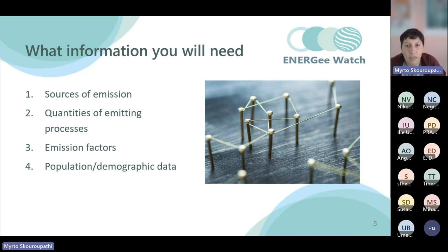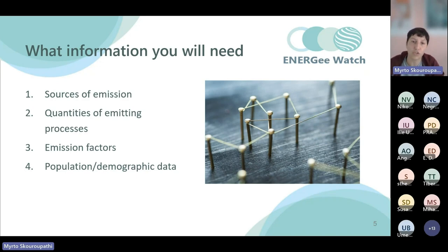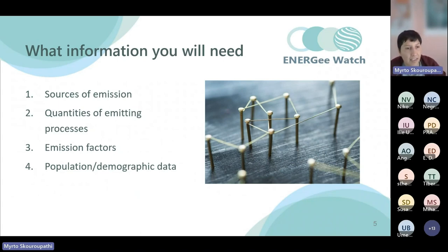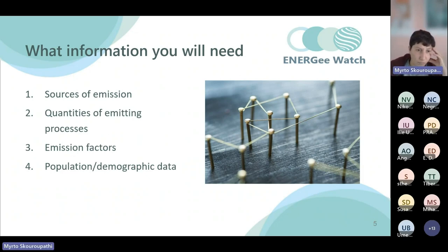What information will you need to set your baseline? When talking about sustainable energy and climate action plans using the Covenant of Mayors methodology — or other methodologies such as the greenhouse gas protocol or NECP methodologies — you need to identify the sources of emissions of different greenhouse gases. Depending on where you set the boundaries, it could be simply CO2 emissions or CO2 equivalent. You also need to find the quantities emitted in each process — first find the sources, then find how much is emitted from each source.